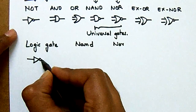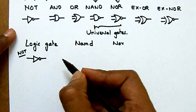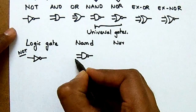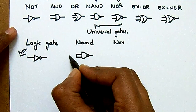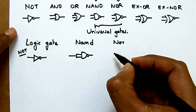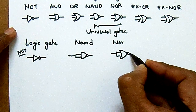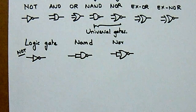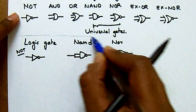The first logic gate is NOT gate, or inverter. How do you represent that with a NAND gate? If we short both the inputs of a NAND gate, then it behaves as a NOT gate. That is how we can represent a NOT gate in terms of universal gates.